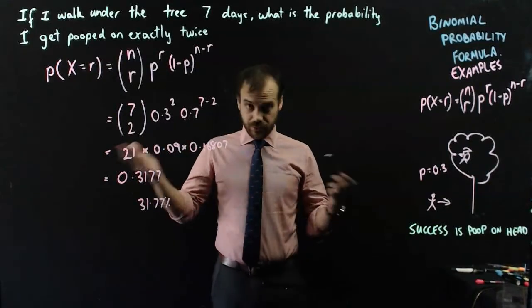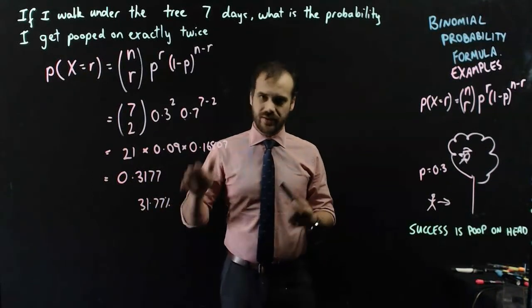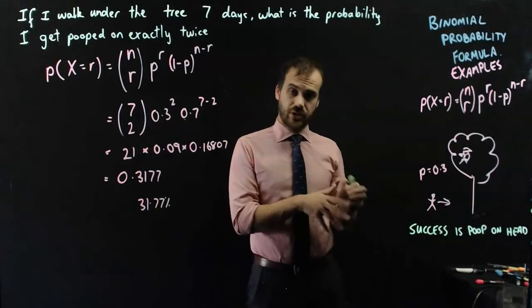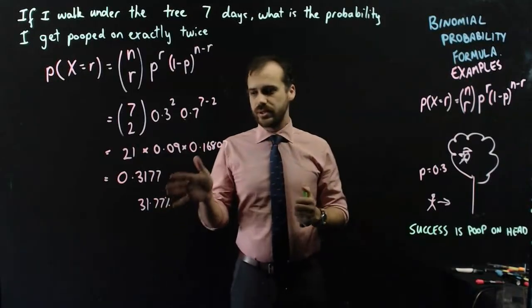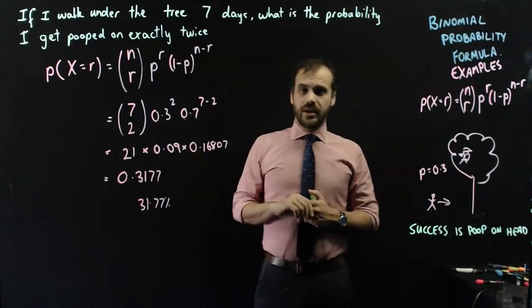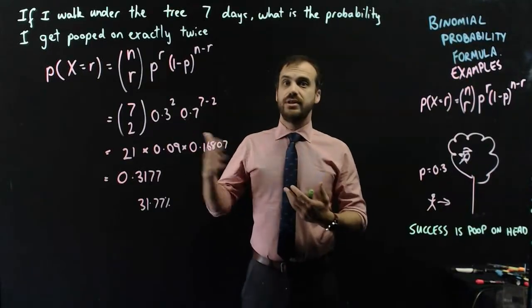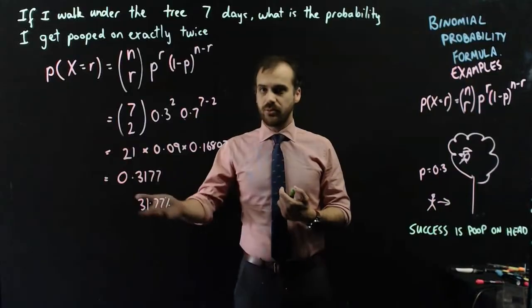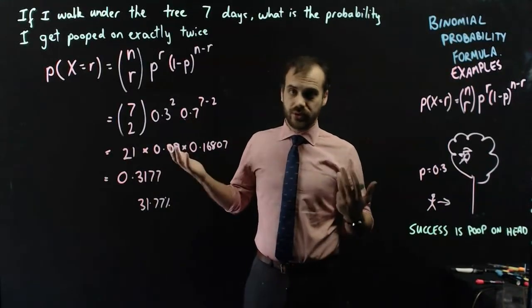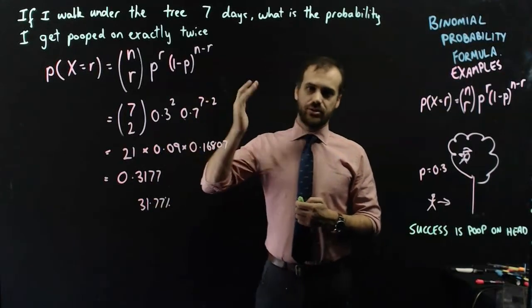So my answer is 0.3177, or you can write it as a percentage, 31.77%. What does that mean? If I walk under this tree 7 times, there is a 31.77% chance that I'll get pooped on exactly twice. If I walk under that tree every day for 52 weeks, that means approximately one third of those weeks, whatever one third of 52 is, I'll get pooped on exactly twice.